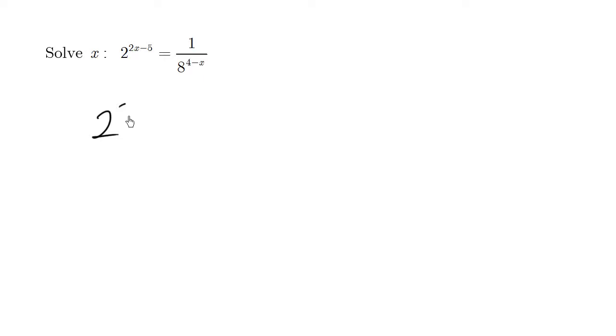So we have 2 to the 2x minus 5 equals 1 over this thing, but the 8 is going to be rewritten as the lowest base. So 2 to the 3 happens to be 8, 2 times 2 times 2 is 8, all to the 4 minus x.